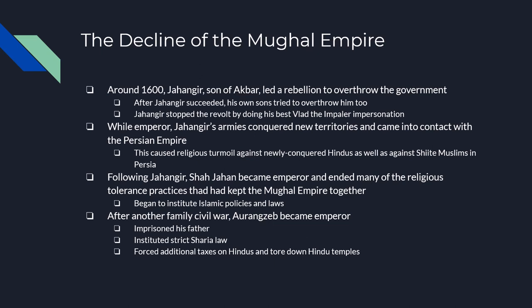Shah Jahan's sons fought each other when they thought their father was on his deathbed. Three of the four sons died, and the one living son, Aurangzeb, becomes the leader of the Mughal Empire. Shah Jahan isn't actually dead at this point — he ends up living an extra five years, but as a prisoner of his own son, who overthrows him and throws him in prison.